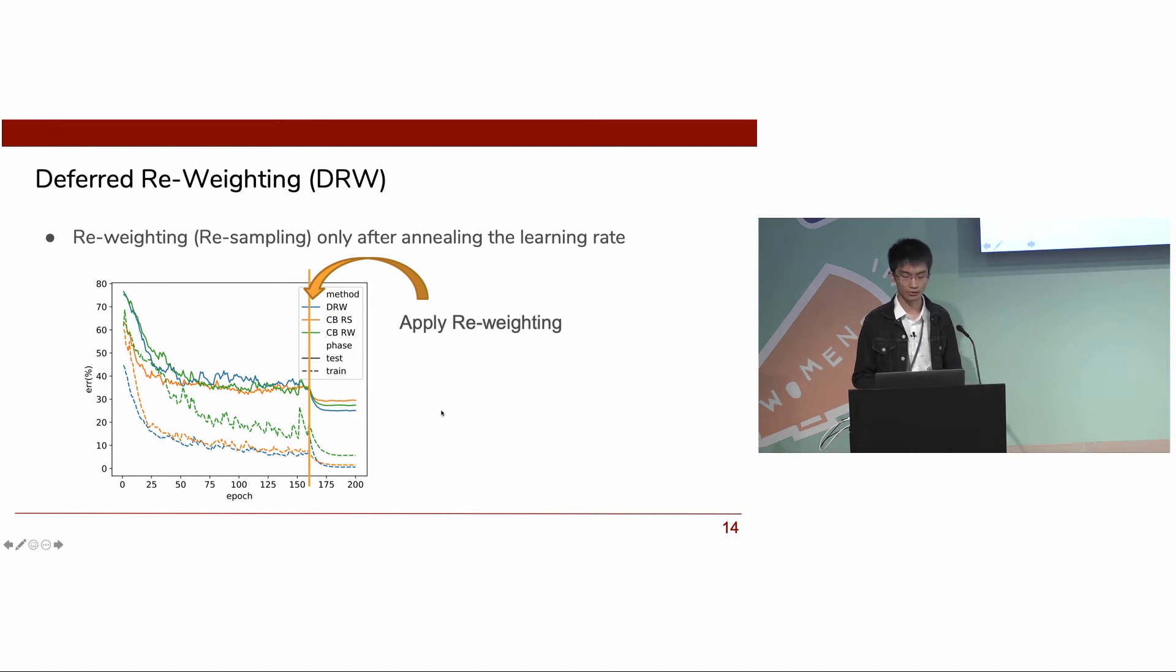We believe that deferred reweighting lets the model avoid the drawbacks associated with reweighting until it learns a good initial representation from ERM. However, the precise explanation for DRW's success is not fully theoretically clear yet.